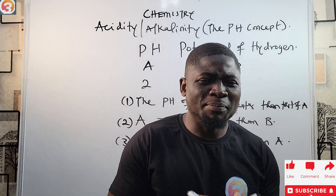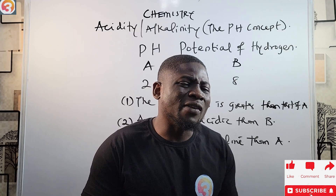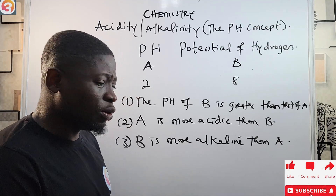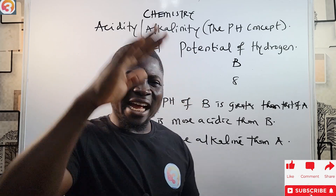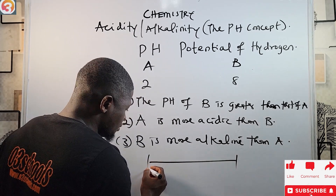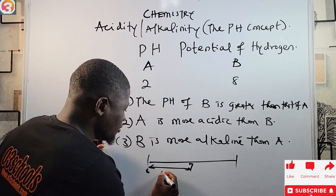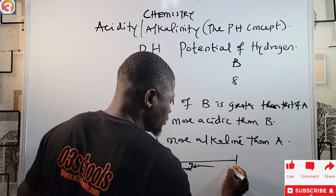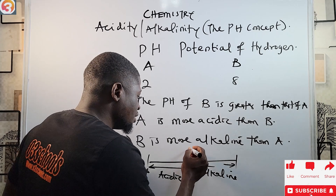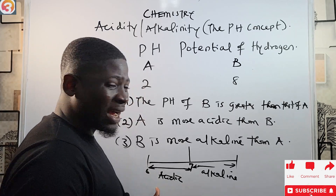pH values are expressed in terms of numbers, but a higher number does not mean more acidic. Looking at the scale from 0 to 14: from 0 to just below 7 is acidic; 7 is the neutral point; and from above 7 to 14 is alkaline. As the pH increases, the substance becomes more alkaline.